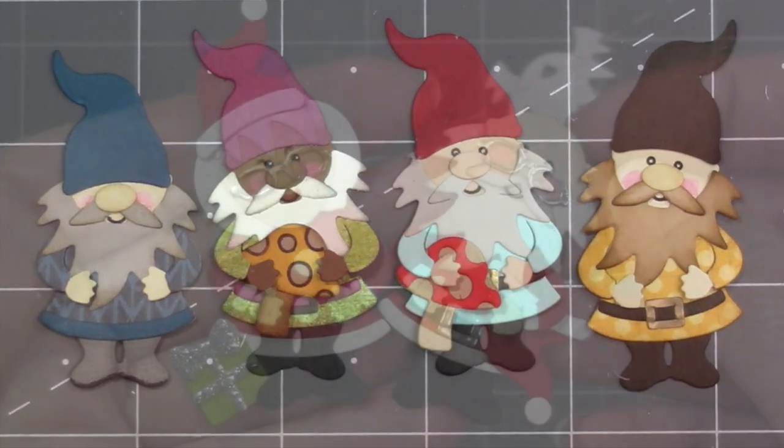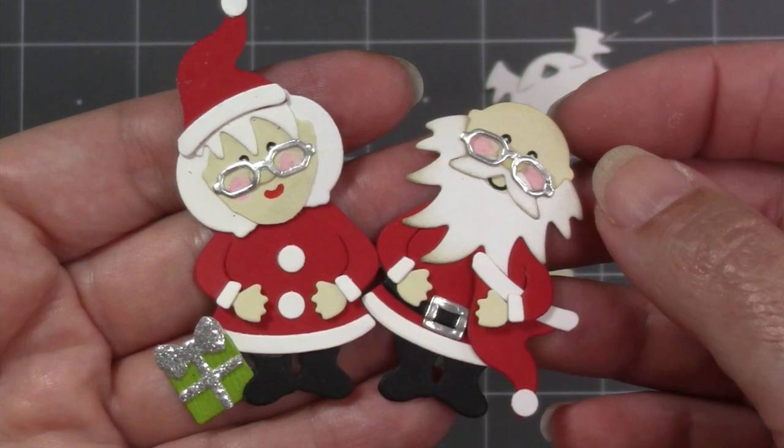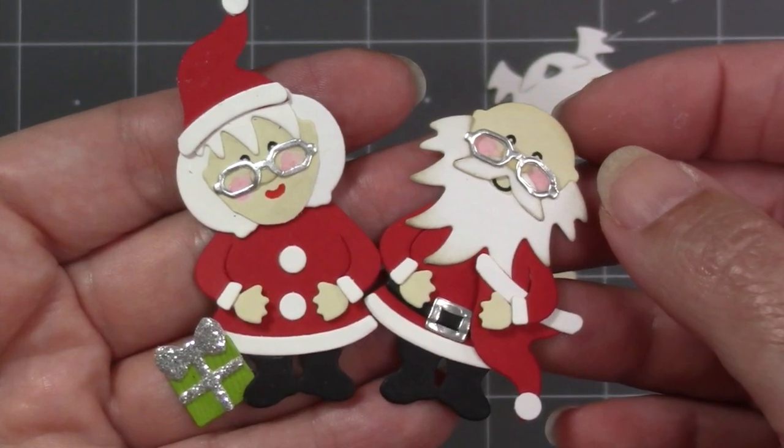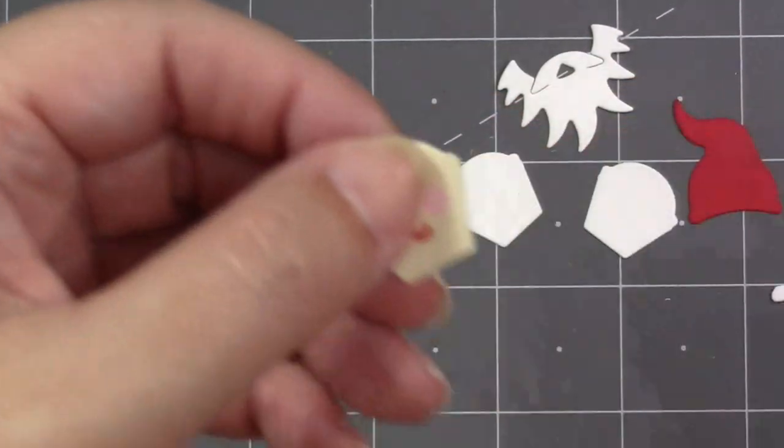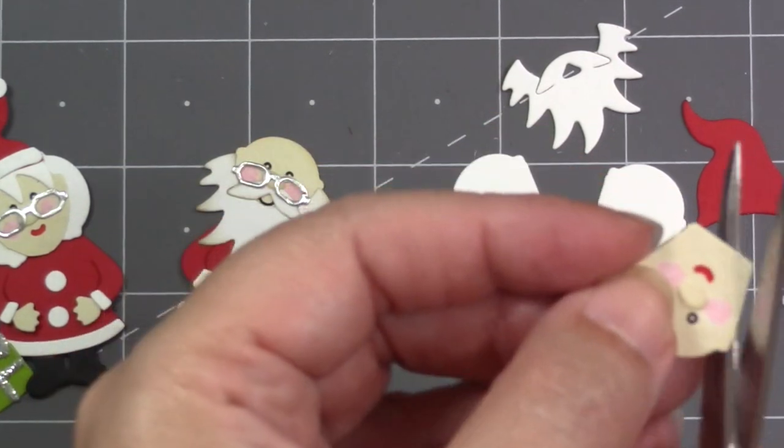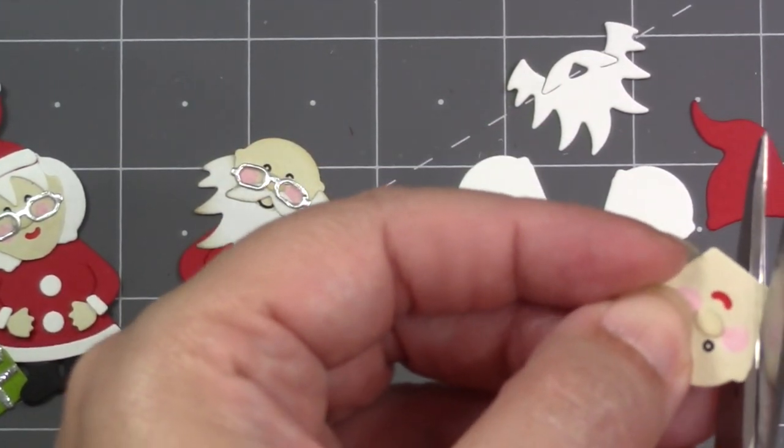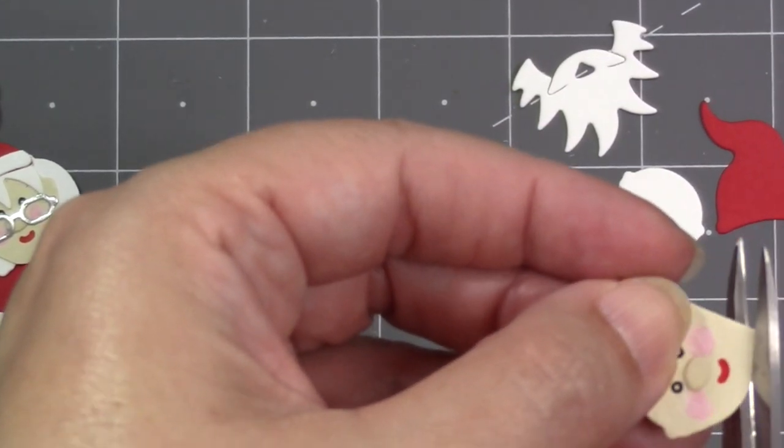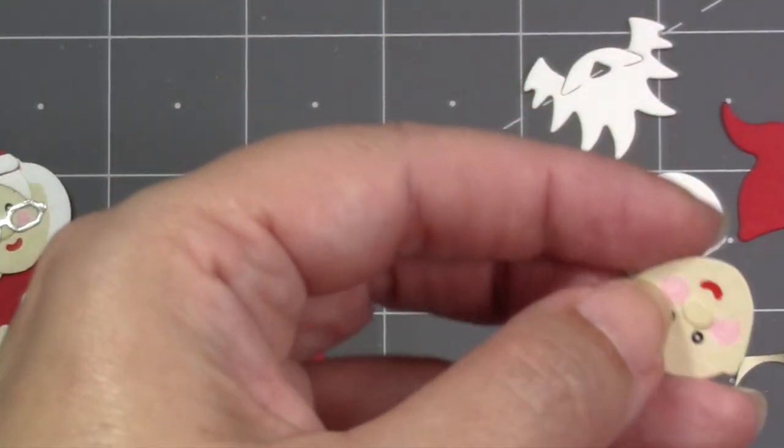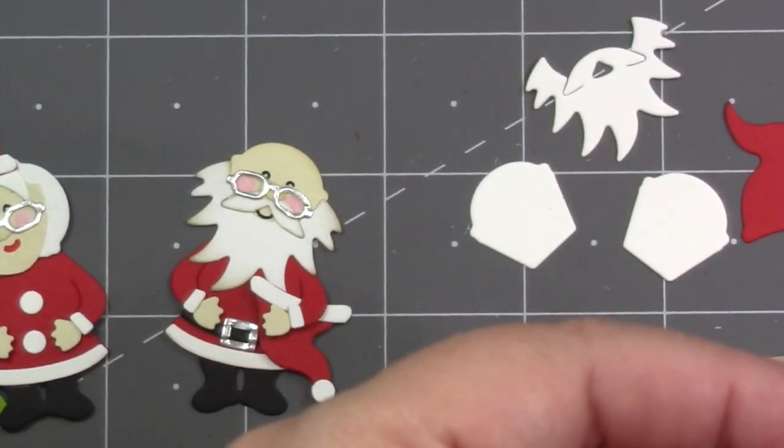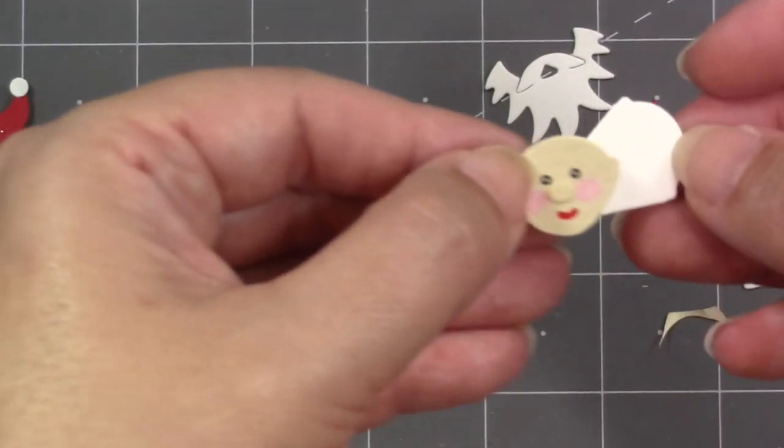Now the set was not intended to make a Mrs. Claus, but I just got to looking at the pieces and figured it would be pretty easy to make one. So here's how I did it. I started with the head, and of course the bottom is very boxy, so I'll have to use my scissors to give her a proper rounded chin. I just used the stencil feature for the eyes and the mouth and just gave her some rosy cheeks with a colored pencil, and then the smaller of the two noses.